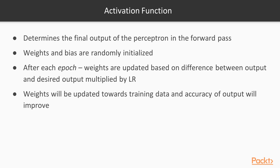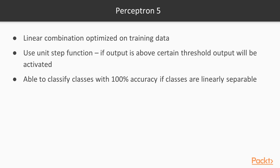An activation function determines the final output of the perceptron in the forward pass. The weights and bias are randomly initialized. After each epoch, the weights are updated based on the difference between the output and the desired output, multiplied by the learning rate. As a consequence, the weights will be updated towards the training data and the accuracy of the output will improve. Basically, the perceptron is a linear combination optimized on the training data.